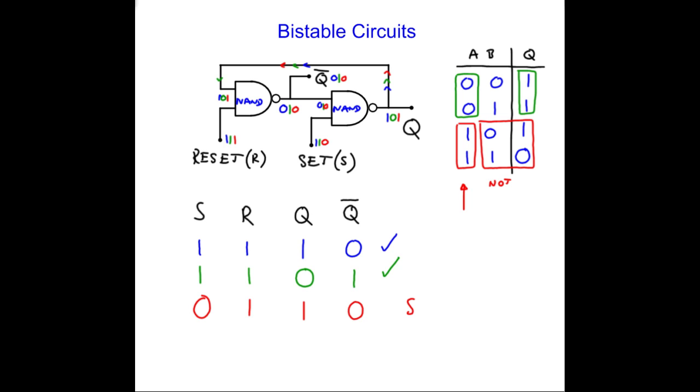So when set equals 0, Q equals 1. So set has to fall to 0 to set Q equal to 1.